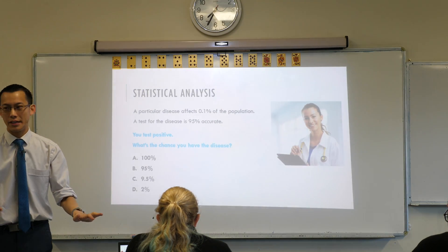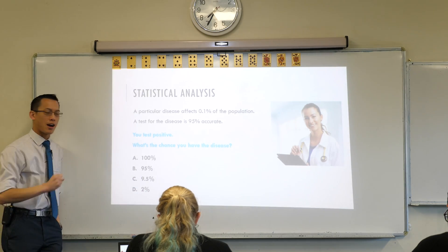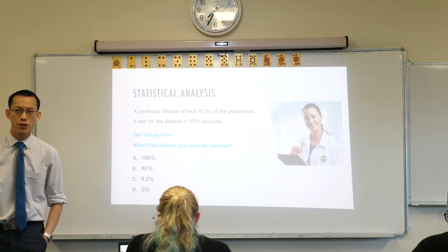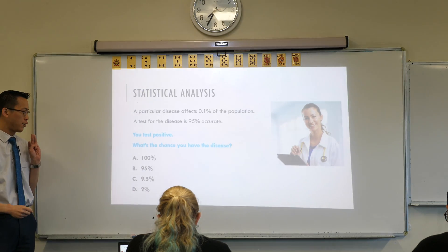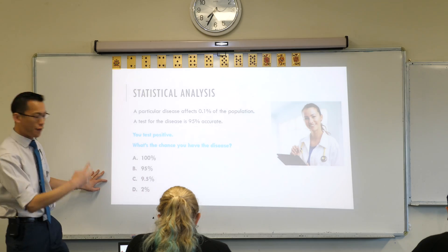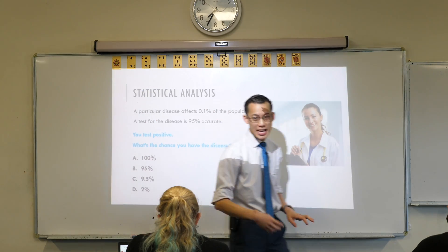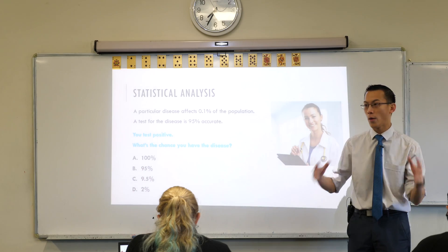And I'd like you to hold up one finger, if you think the answer is A, 100%. Two fingers, if you think the answer is B, 95%. Three fingers, if you think the answer is C, 9.5%. And four fingers, if you think the answer is D, which is 2%. So I'm looking for one, two, three, or four fingers. I'm going to wait until everyone votes.